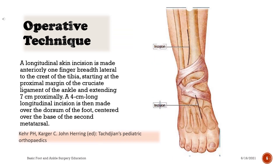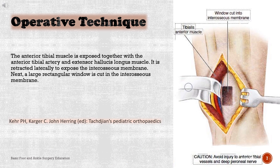A longitudinal skin incision is made anteriorly 1 finger breadth lateral to the crest of the tibia, starting at the proximal margin of the cruciate ligament of the ankle and extending 7 cm proximally. A 4 cm long longitudinal incision is then made over the dorsum of the foot, centered over the base of the second metatarsal. The anterior tibial muscle is exposed together with the anterior tibial artery and extensor hallucis longus muscle, and retracted laterally to expose the interosseous membrane.